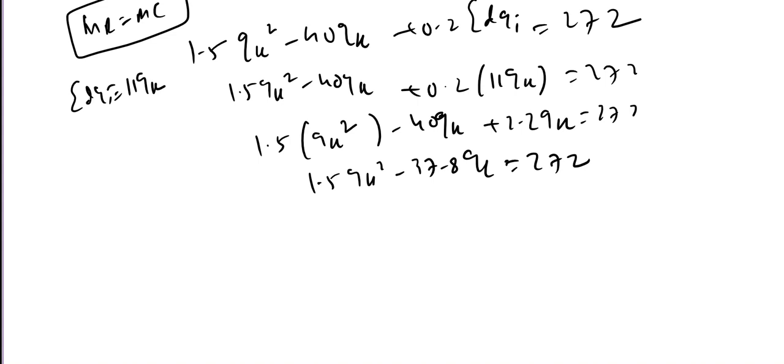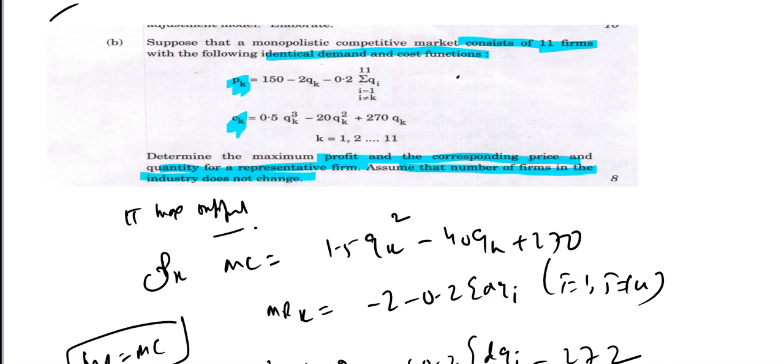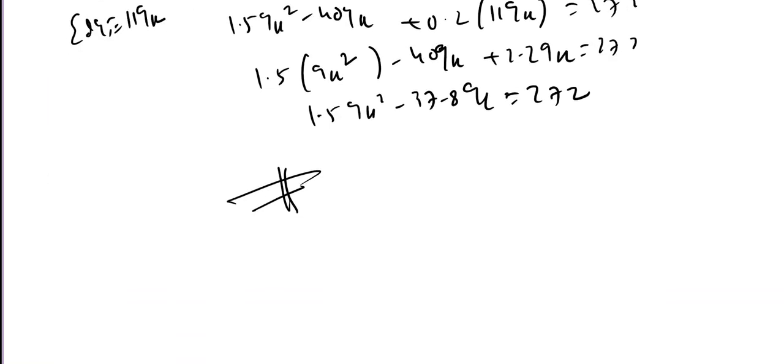Solving the quadratic equation will give us the value of the output. This is very easy. Just solve it to find the maximum profit and corresponding price. I am giving it as a hint. You want me to solve?